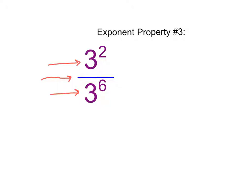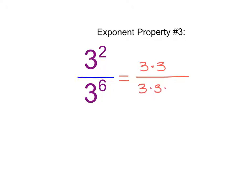Our common base here is 3. So we're going to see if we can figure out a shortcut to help us simplify this using a pattern that we see. What I'm going to do is expand out that numerator. So 3 squared is 3 times 3. And then if I expand out my denominator, I get 3 times 3 times 3 times 3 times 3.